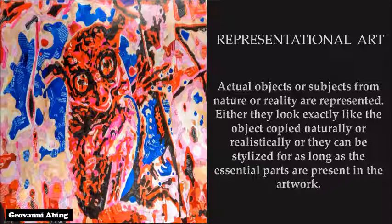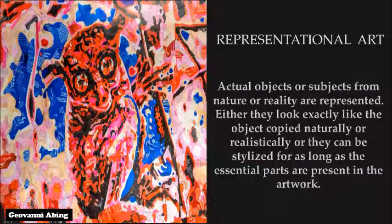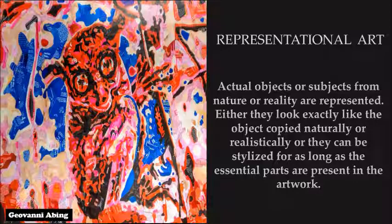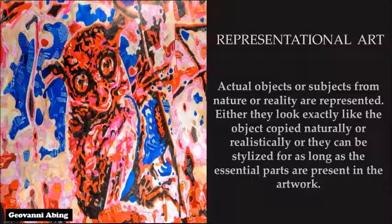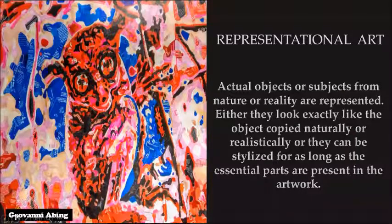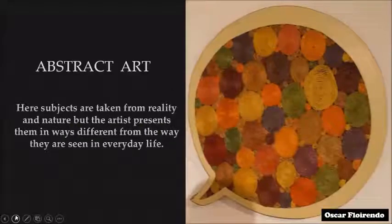A very good example of representational art is shown on the picture. That artwork was created by Giovanni Abing and titled The Corsier Fever. It is a collage on paper artwork from 2014. In this kind of art, either they look exactly like the object that is copied naturally or realistically, or they can be styled as long as the essential parts are present in the artwork.